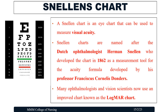The visual acuity of a person can be easily assessed with the help of a Snellen's chart. A Snellen's chart is an eye chart used to measure visual acuity. It is named after the Dutch ophthalmologist Hermann Snellen, who developed it in 1862 as a measurement tool for the acuity formula developed by his professor Francis Corleus Donders. Many ophthalmologists and vision scientists now also use an improved chart known as the Logmar chart.